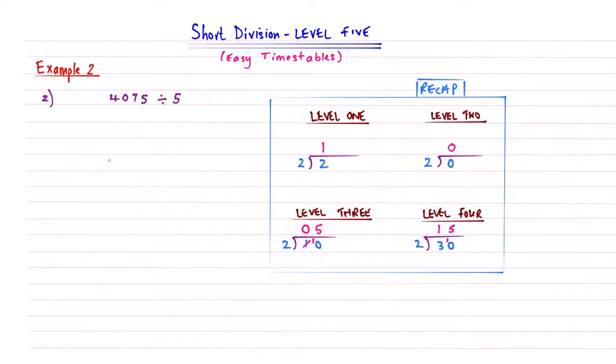Okay, so here is example number 2. So curly brace and my line. So I'm now going to write my numbers underneath. So it's 4,075 divided by 5.